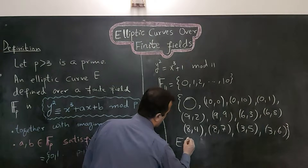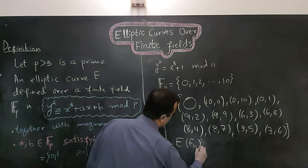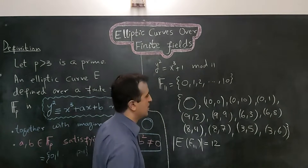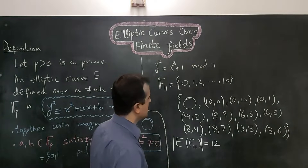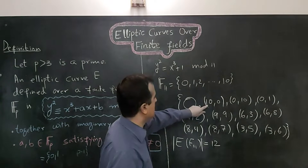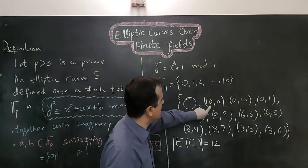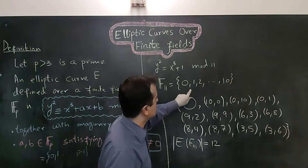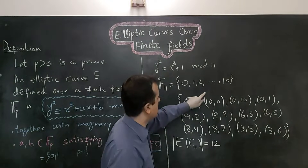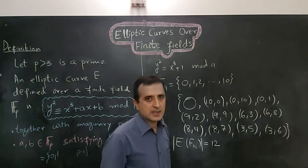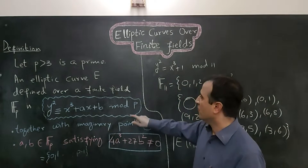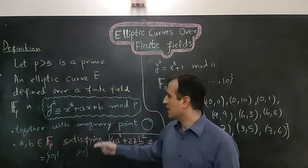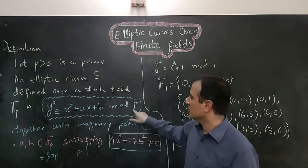The cardinality of this elliptic curve over field F11 is equal to 12, because it has 12 points defined over it. All the x-coordinates and y-coordinates are derived from the field members. The mod p means that all operations performed over those elliptic curves will have mod p applied to them.